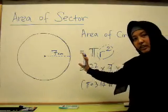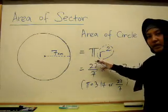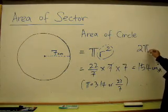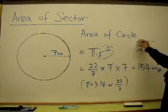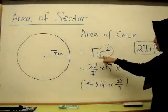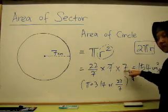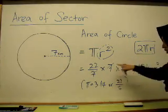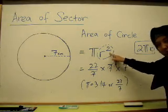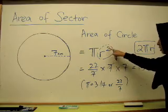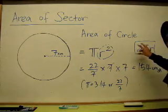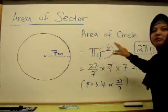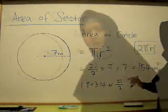So the answer is 154 cm squared. Very easy to find the area of a circle, right? Just using pi R squared. Circumference is different — circumference is 2 pi R, very different from this. Area is pi times R times R; circumference is 2 times pi times R. Very different.